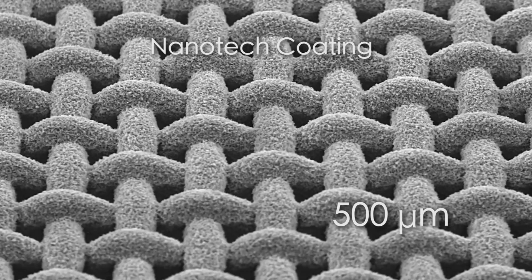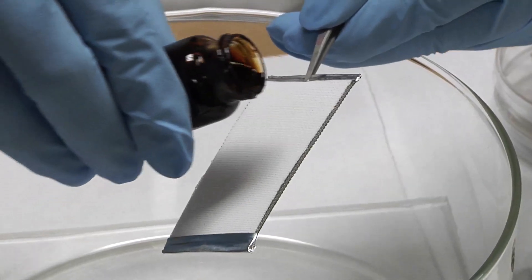Imagine a net. The openings in the net are the air pockets, and if a liquid is a tennis ball, it can't go through the net. The result is a surface that's impenetrable to fluids.